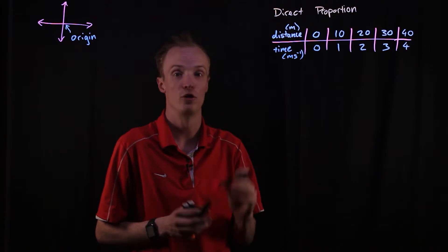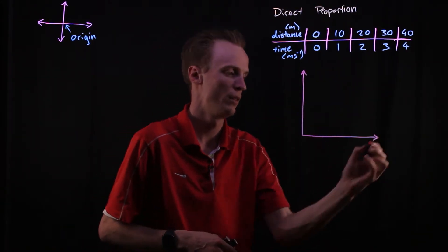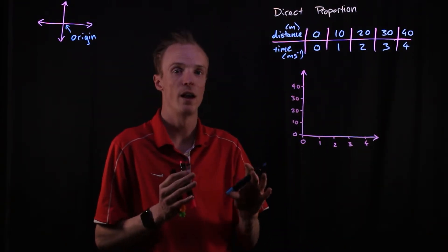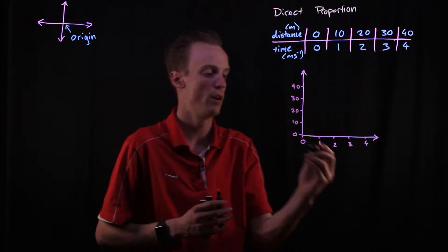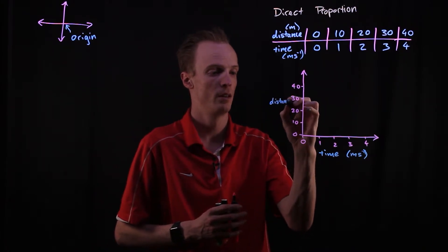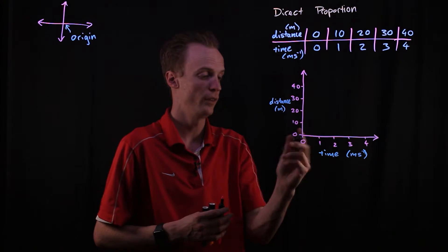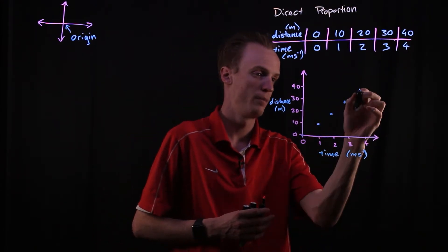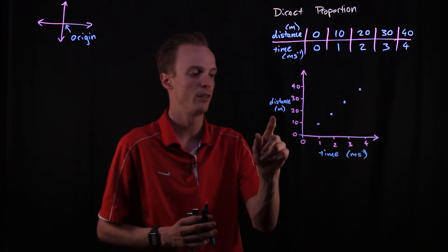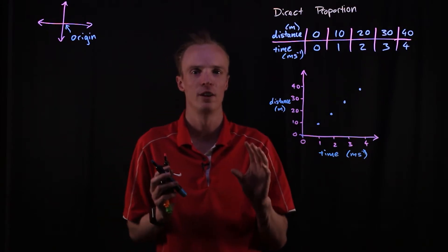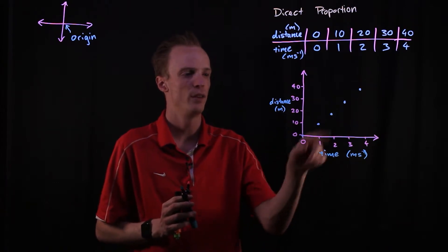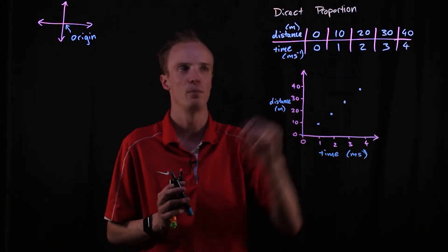If we produce a graph of this, we place our independent variable — time — on the horizontal axis, and our dependent variable — distance — on the vertical axis. We can now see that we do in fact have a linear relationship between distance and time. But it's a very special linear relationship because it actually cuts through the origin, and when it does, we consider this relationship to be in direct proportion.